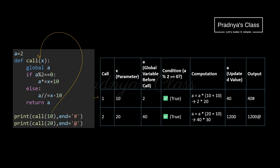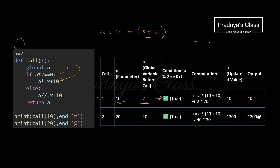In call one x is 10 and a is 2. Since 2 is divisible by 2 the condition is true, so we execute: a multiply-equals x plus 10. Note that addition has higher priority than augmented assignment, so x plus 10 is evaluated first: 10 plus 10 equals 20. Then a into 20 gives 40. We print the return value 40 followed by the end parameter hash symbol.